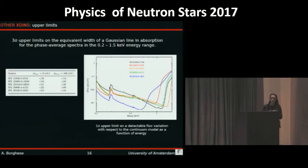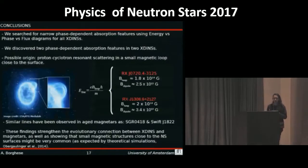To sum up, we searched for phase-dependent absorption features in all the X-DINs using energy versus phase versus flux diagrams, and we found phase-dependent features in two X-DINs. For all the others, we derived 3-sigma upper limits. Because of the strong dependence on the phase, this line might be due to proton cyclotron resonance scattering in a small loop close to the stellar surface. So knowing the energy of the line, we can derive the strength of the magnetic field in the loop.